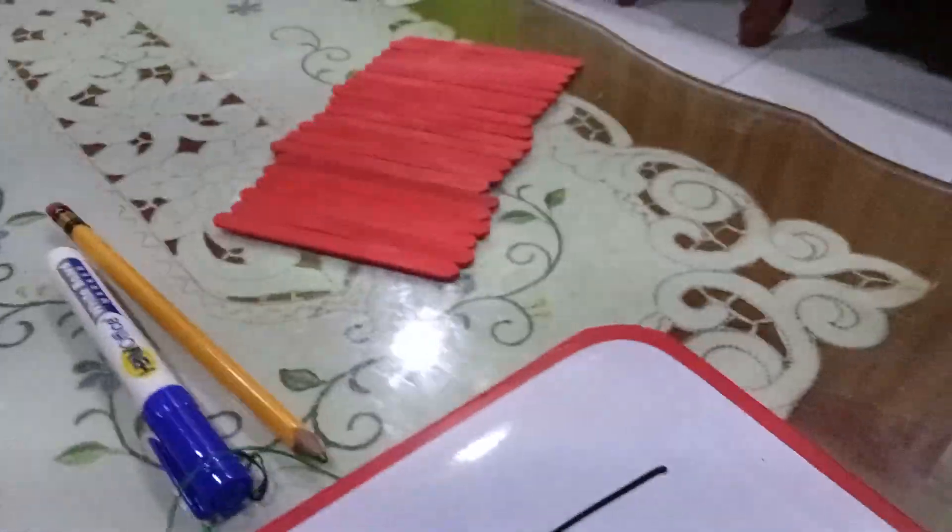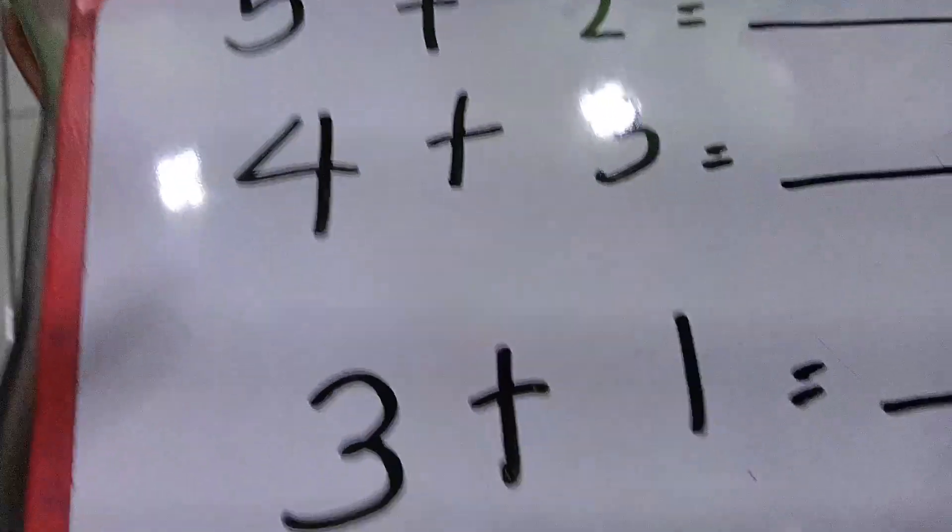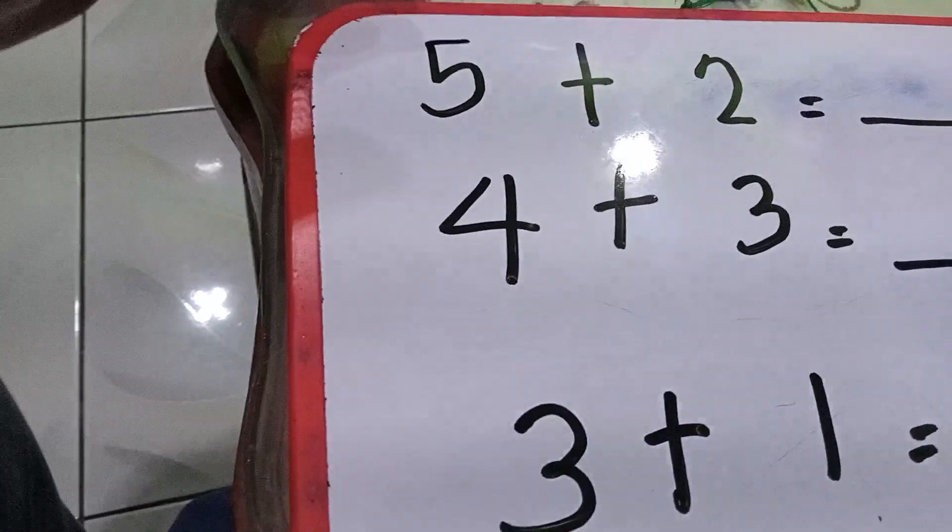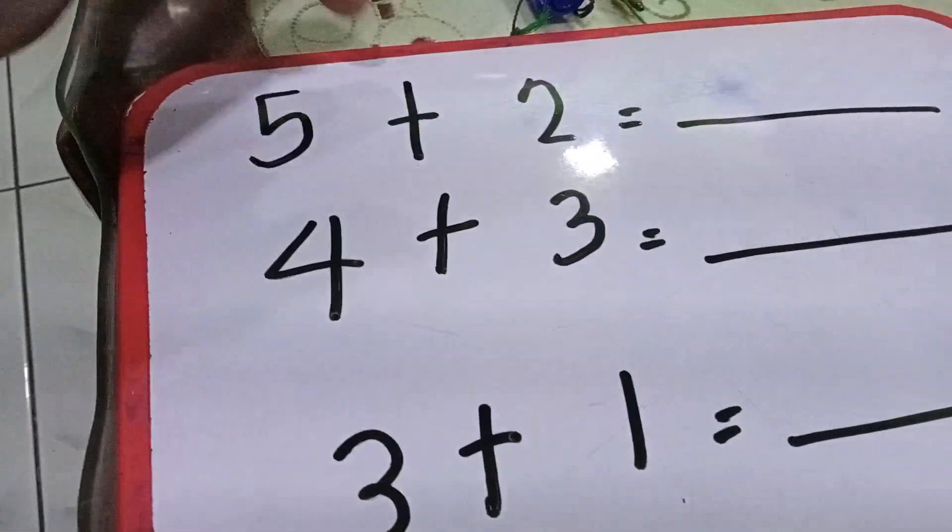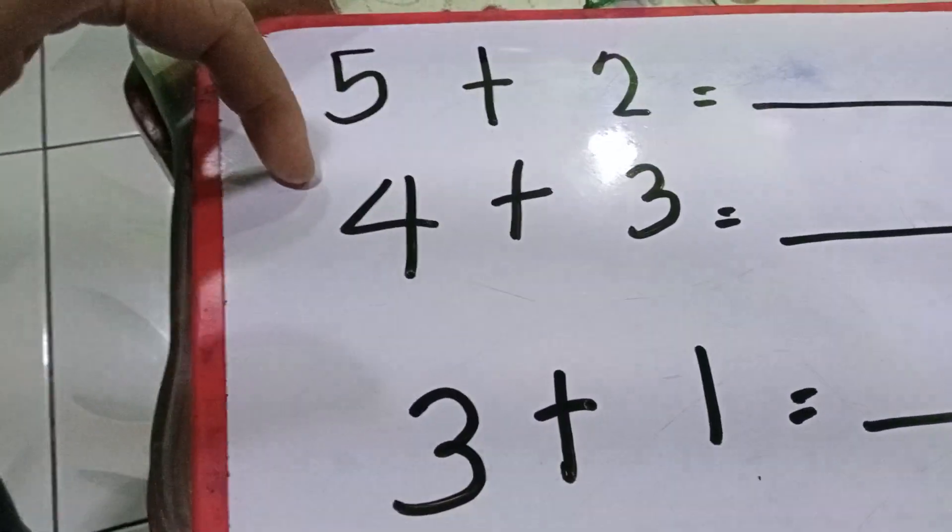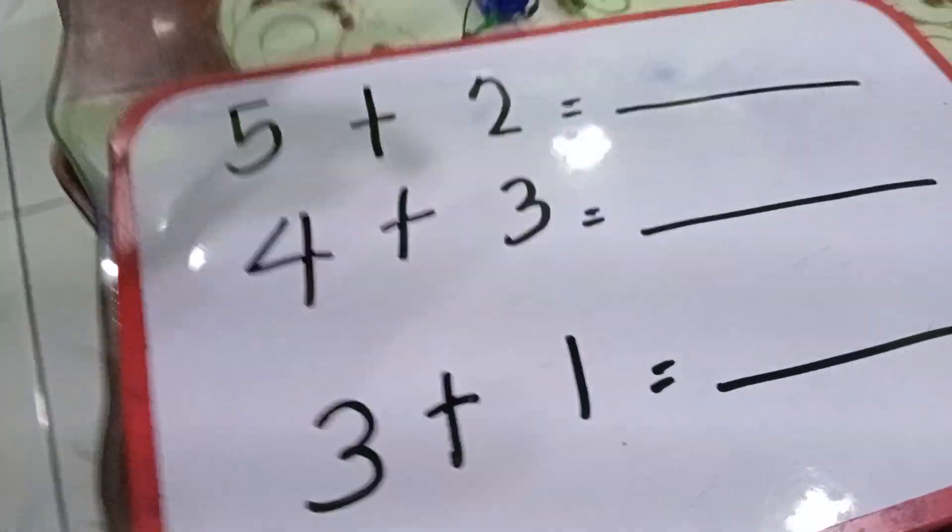We're going to have our addition using popsicle sticks. We have here, listen Blake. Number one, listen. First our problem: 5 + 2, 4 + 3, and 3 + 1. Okay, you're going to start number one.